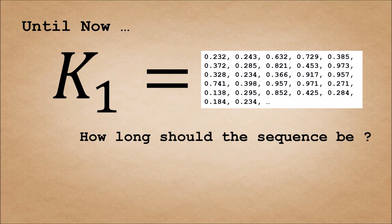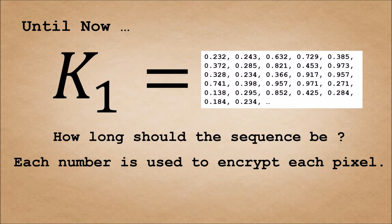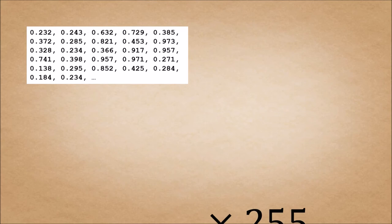Until now, we have a random sequence from the logistic map function. Let's call this sequence k1. The question is, how long should the sequence be? Since each number is used to encrypt each pixel, the length of the sequence should match the number of pixels, which is m times n.